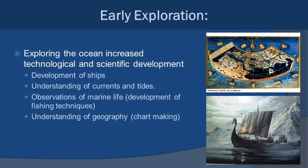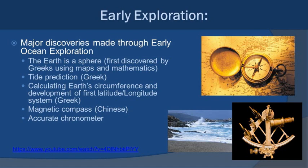Soon it wasn't just about building ships — it was also about understanding tides and currents, observing marine life to find the best places to access food, and understanding geography by creating charts to find out where things were in relation to each other. Interestingly, a lot of these developments were discovered by the Greeks. They were the first to understand that the Earth was a sphere through their maps and mathematics. Though this knowledge was lost through the Middle Ages, the Greeks also predicted tides by monitoring moon phases, calculated the circumference of the Earth, and developed the first latitude and longitude systems.